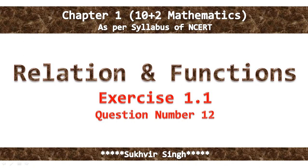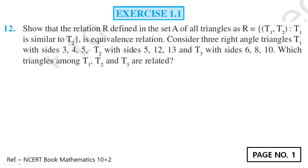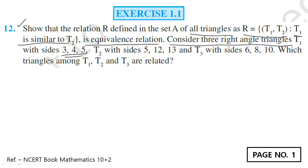Hello students, welcome to today's lecture on relations and functions. I am going to discuss question number 12 of Exercise 1.1. The statement is: show that the relation R defined in the set A of all triangles as R = {(T1, T2) : T1 is similar to T2} is an equivalence relation. Consider three right-angle triangles — T1 with sides 3, 4, 5; T2 with sides 5, 12, 13; and T3 with sides 6, 8, 10. Which triangles among T1, T2, and T3 are related?